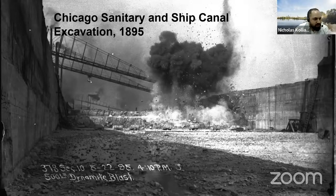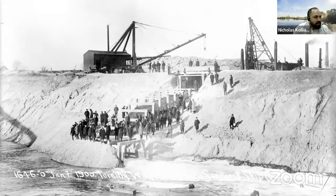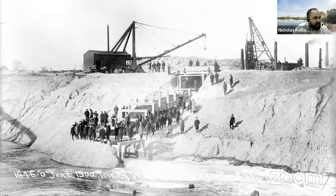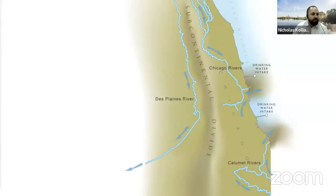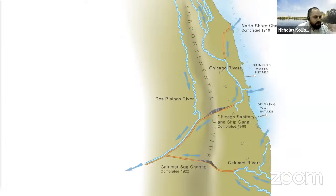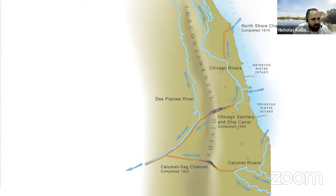Here you can see more of the canal being dug. In 1899, during construction in the winter, you can see people ice skating down the canal before it was finished and completely filled with water. There are also historical photos of dynamite being used to blast through a lot of the rock. Back in those days, they thought the solution to pollution was dilution — just add lake water and send it downstream.